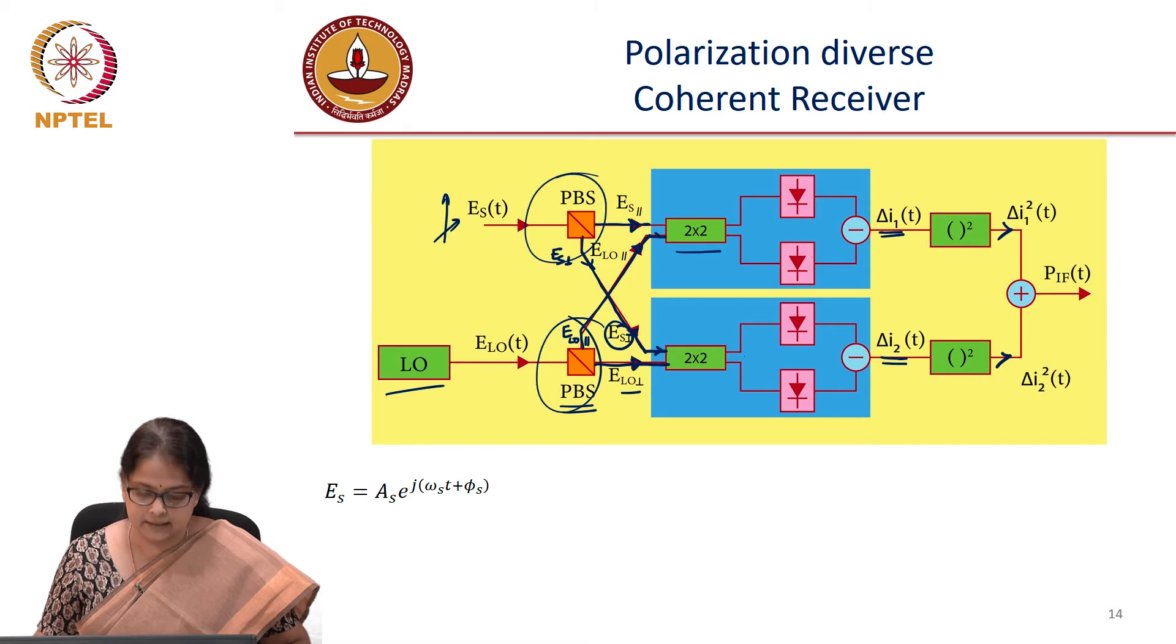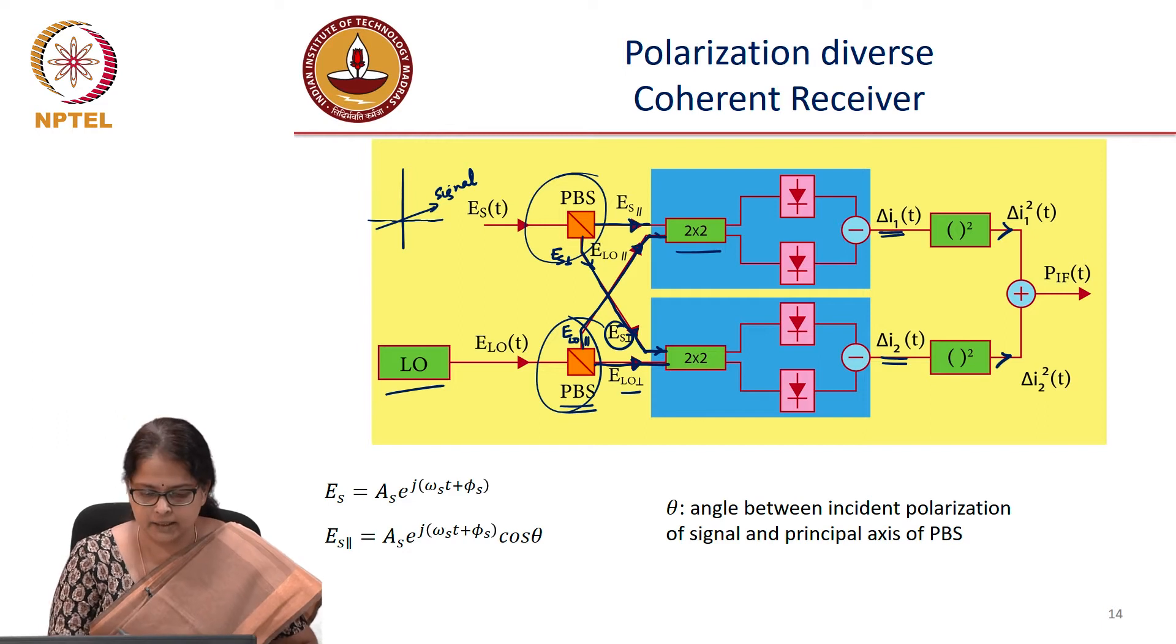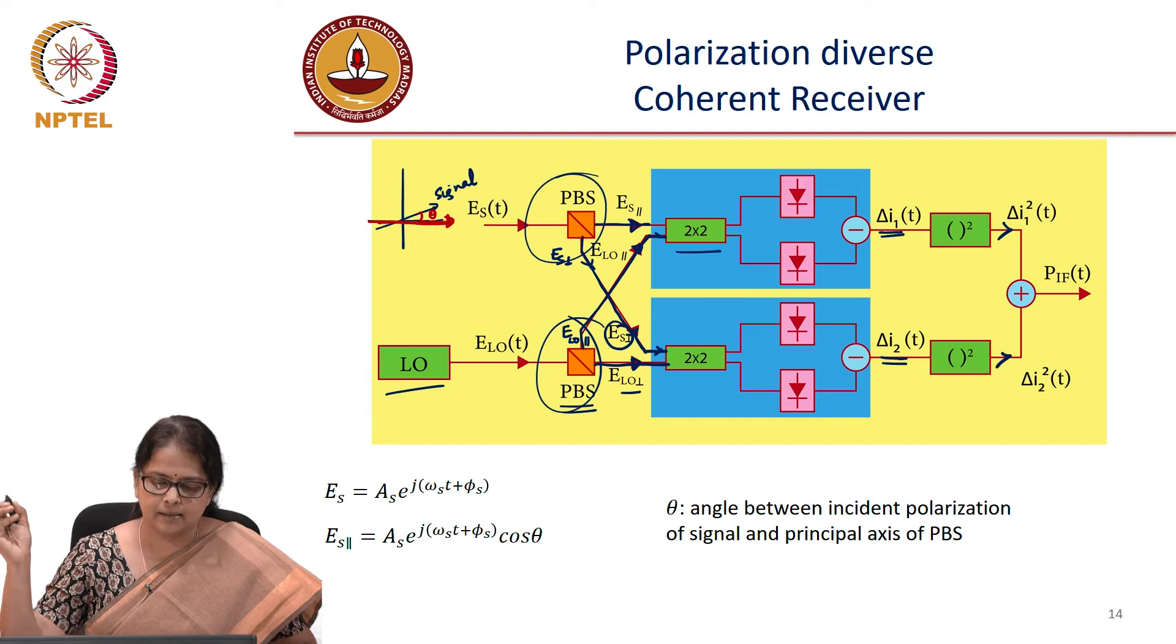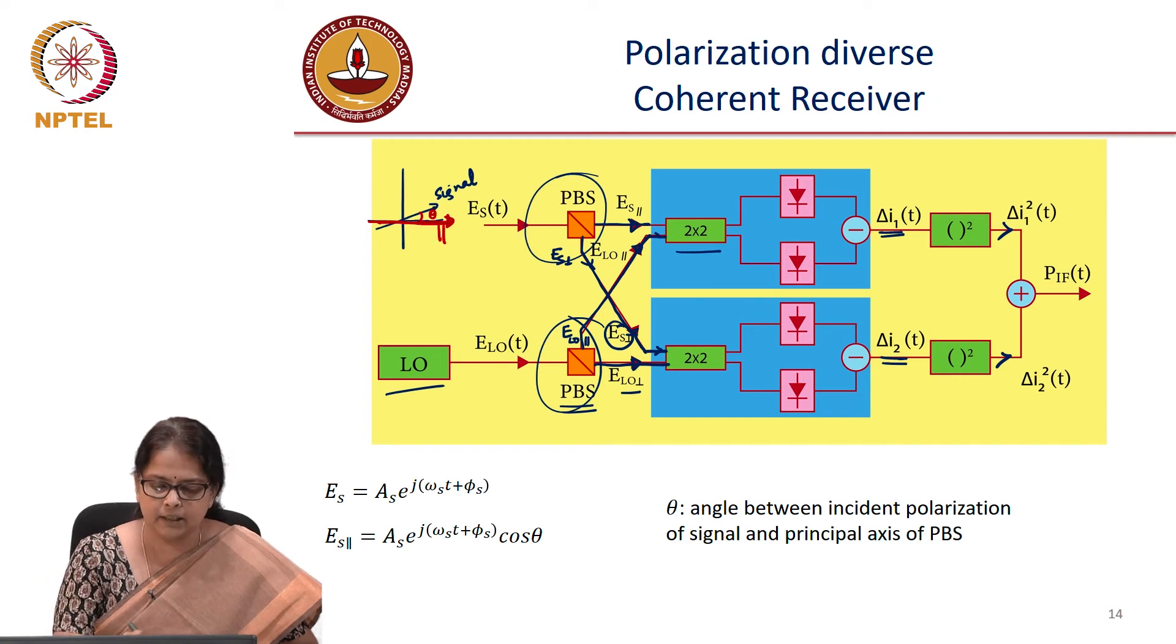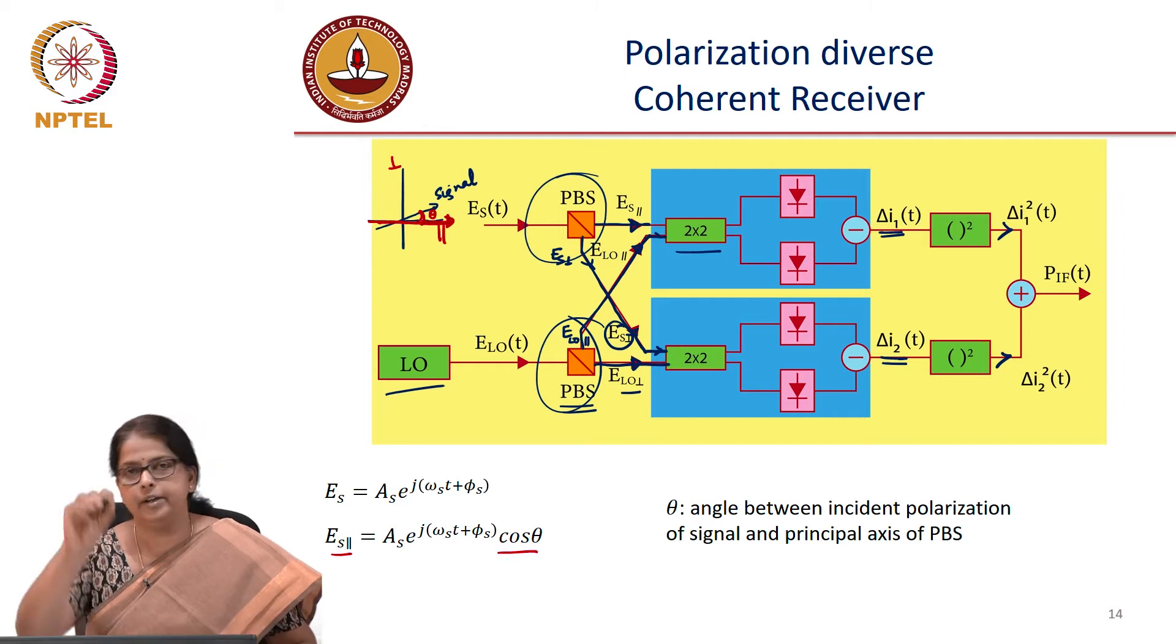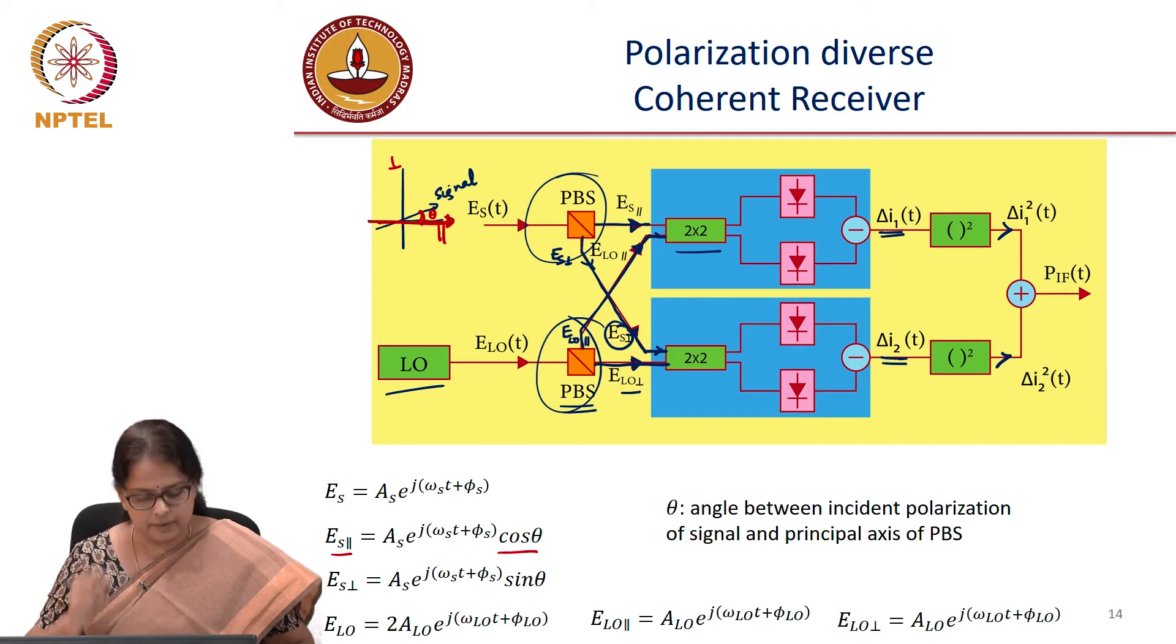Your ES is again like last time, As e power j omega s t plus phi s. So let us represent theta in this diagram. So let us say theta is the angle with the principal axis of the PBS, the polarization beam splitter. Let us say this principal axis is, let us say this is the parallel direction and this is the perpendicular direction. Then ES parallel is AS cos theta component of the signal and the perpendicular polarization is the sin theta component.